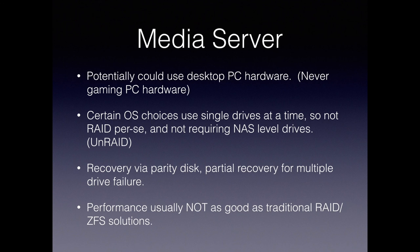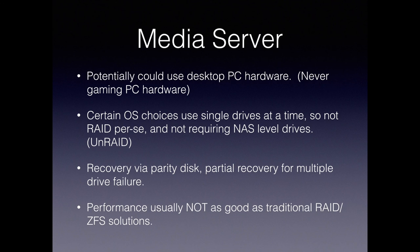If you're using RAID or ZFS, you do need NAS-level hard drives. The other nice thing with Unraid for media servers is if a single drive fails, similar to RAID 5, a parity disk can rebuild that information. But unlike RAID 5, if a second drive fails, you can still regain the data on the drives that did not fail, because it's not striped. You might have Star Trek on one set of drives, Star Wars on another, Lord of the Rings on another — if your Lord of the Rings drive died, you'd still have Star Wars and Star Trek even if the parity drive was also out. However, because drives aren't striped, you don't get the performance advantage you might get with RAID 5.